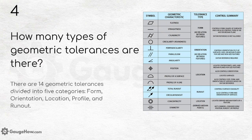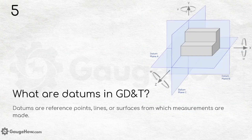If you see the table, you will find all the symbols present for these categories. I suggest you note down all these symbols along with their tolerance type and characteristics for better understanding. What are datums in GD&T? Datums are reference points, lines, or surfaces from which measurements are made.